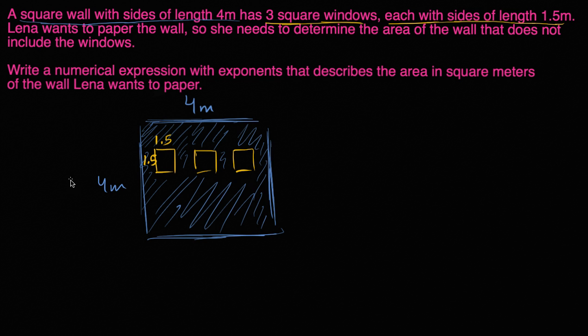And so what's that going to be? Well the area of the larger wall is going to be four times four. We can just write that as four to the second power, or four squared. The reason why people even call it four squared is because that's how you figure out the area of a square. Four squared. And then you're gonna want to subtract out the area of these three windows. So there's three windows. Each of them have an area of 1.5 squared. 1.5 squared. This area is 1.5 squared. 1.5 times 1.5. This area is 1.5 times 1.5. This area is 1.5 times 1.5. So you get 4 squared minus 3 times 1.5 squared. And there you go. That's going to be the area that she wants to paper.